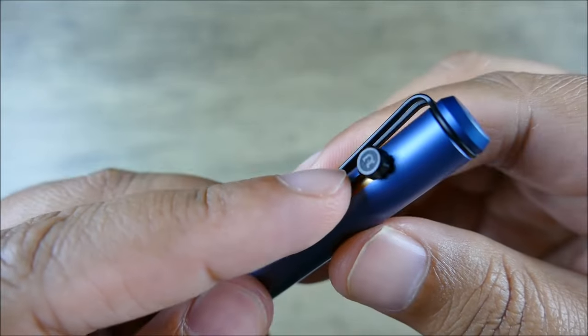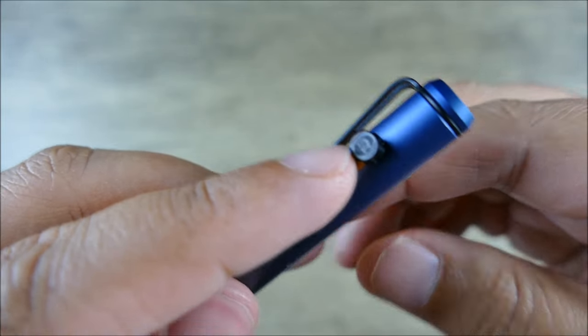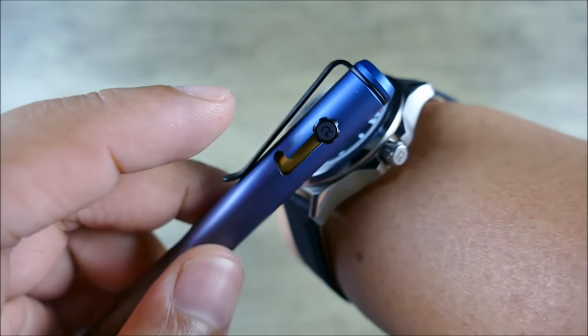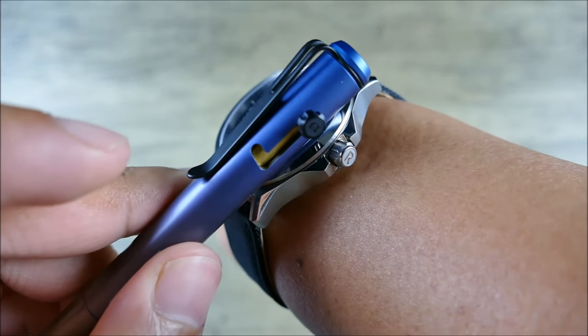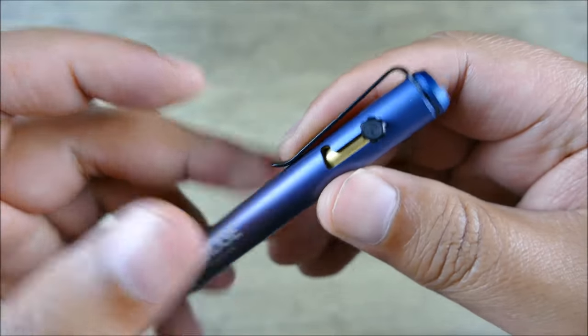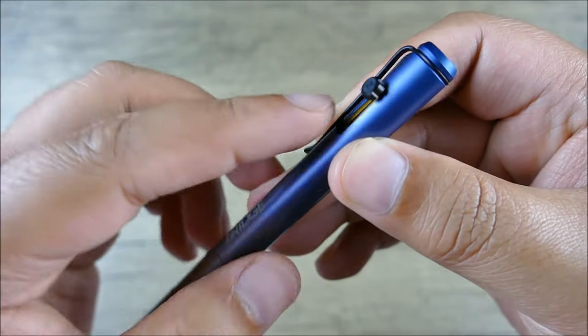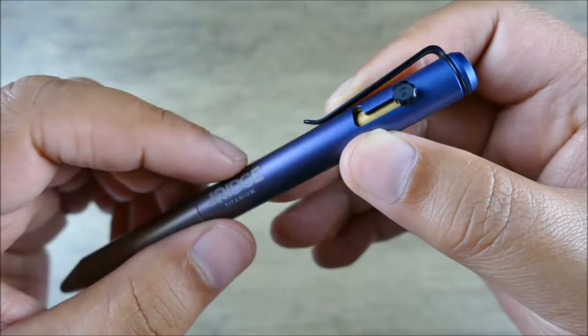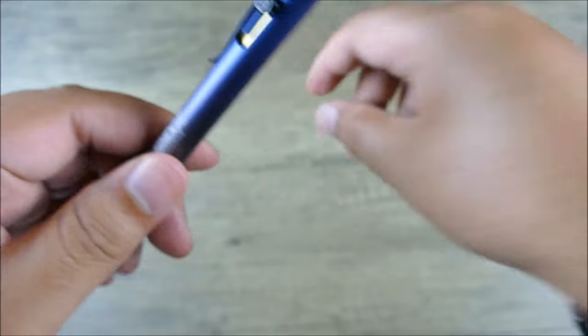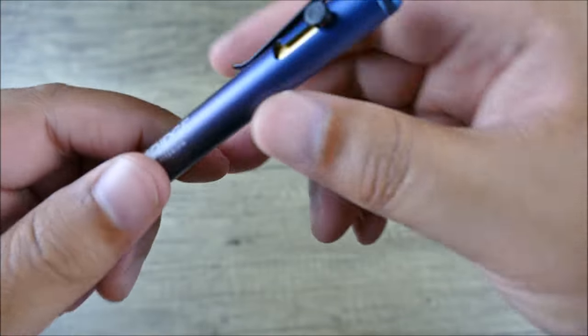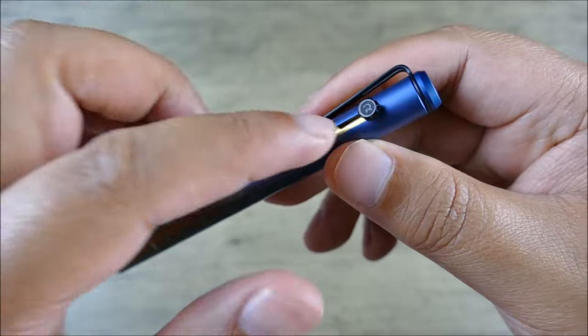If you notice, the bolt action actually looks a lot like the crown on the watch, which is pretty cool. So if you're a big watch guy and you buy the watch, the pen has that little tie-in. Or if you're a big pen guy, you could potentially buy this watch to tie in to the bolt action.